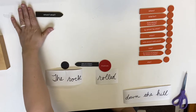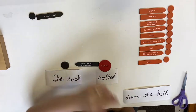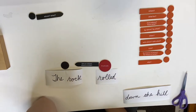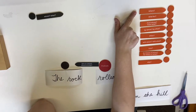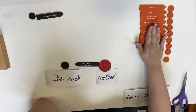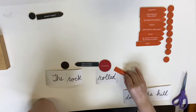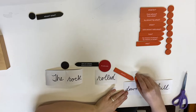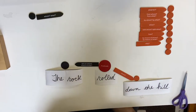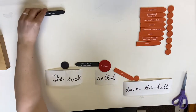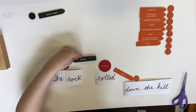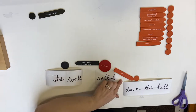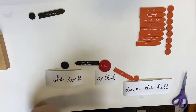Now here we have some orange arrows that are going to ask us some questions. The rock rolled where? Does 'down the hill' answer where? Yeah, actually it does! So I'm going to take this and put it here. The rock rolled where? Down the hill. Now you notice there is no direct object in this sentence — remember that's okay. It just has to have a predicate and a subject. This 'where' is telling us more about 'rolled.'